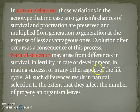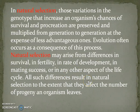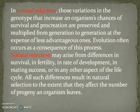Natural selection may arise from differences in survival, fertility, rate of development, mating success, or any other aspect of the life cycle. All such differences result in natural selection to the extent that they affect the number of progeny organisms leave. Natural selection is an evolutionary force for the population — it favours the survival of organisms with useful characters while eliminating organisms with harmful characters.